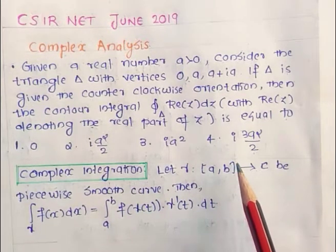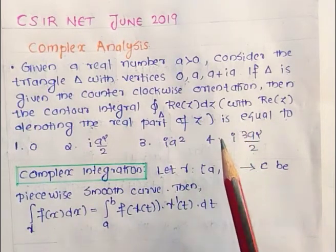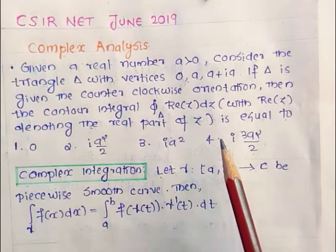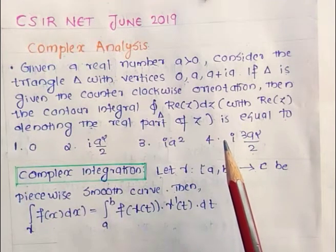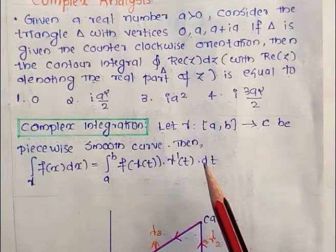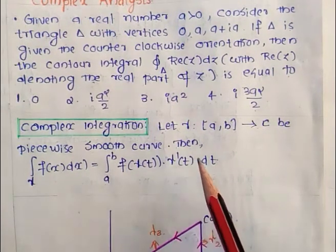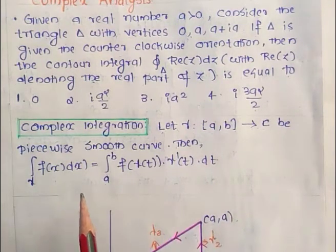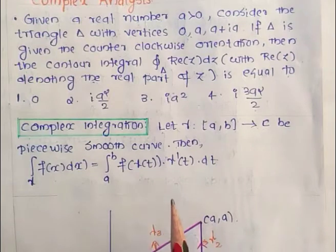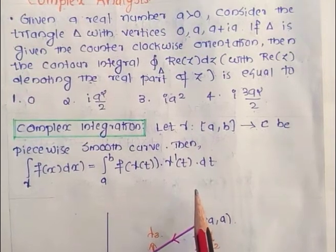So here we want to find the contour integral of Re(z) dz over delta. In order to find the contour integral, we need to know what complex integration is. For a piecewise smooth curve gamma from closed interval [a, b] to z, the integral over gamma of f(z) dz equals the integral from a to b of f(gamma(t)) times gamma'(t) dt. That is, we are transforming into parametric form.